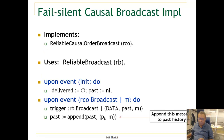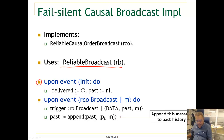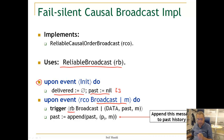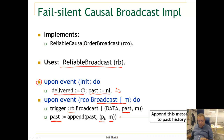Looking at the implementation: this is a reliable causal order broadcast that uses the reliable broadcast RB abstraction. We initialize two local variables — a delivery set called 'delivered' and an ordered list called 'past', initially empty. Whenever a broadcast request is initiated, we trigger an RB broadcast of the message M carrying the current 'past'. Initially past is empty, but later it may contain other messages. Then we append M to the local 'past' variable, which holds all causally preceding messages at this process.